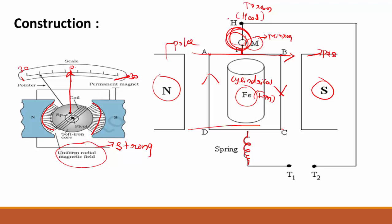Due to this torque, the suspension wire is twisted. This twist in the suspension wire produces a restoring torque which opposes the deflecting torque. At the equilibrium position, the deflecting torque and the restoring torque balance each other. If the current through the galvanometer is suddenly stopped, the coil returns to its initial position due to the restoring torque. The coil consists of N number of turns.